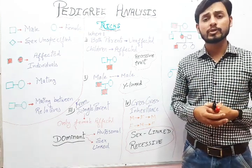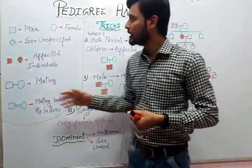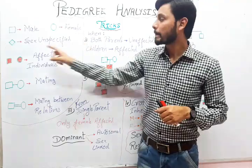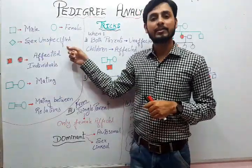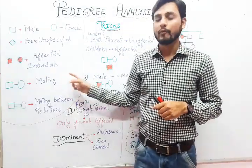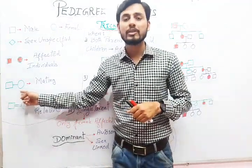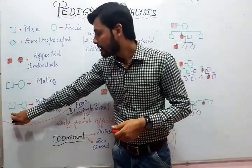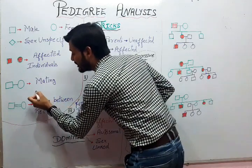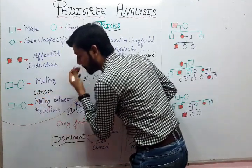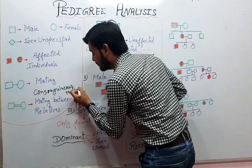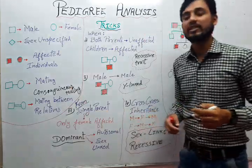In pedigree analysis, specific symbols are used. A square indicates male, a circle indicates female, and a diamond indicates unspecified sex. Shaded symbols indicate affected individuals. A single line between male and female shows mating, while a double line indicates mating between relatives, also called consanguineous mating.